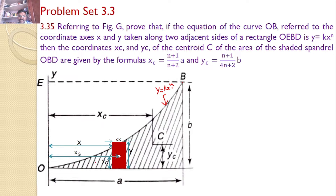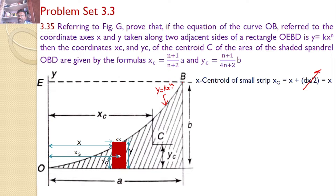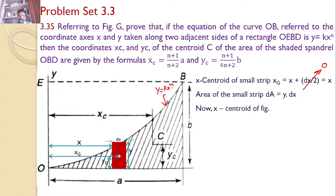We calculate XG and YG, the centroid coordinates for this small rectangular strip, and then integrate over the entire area. The X centroid of the strip, XG, equals X plus DX/2; since DX is very small, DX/2 is neglected, so XG becomes X. The area of the small strip is DA = Y·DX. Hence, the X centroid for the given figure is XC = ∫XG·DA / ∫DA, where XG = X and DA = Y·DX.